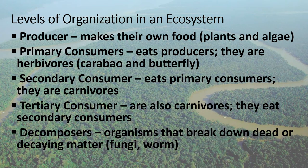This is the level of organization in an ecosystem. Producers can make their own food, like plants and algae. Primary consumers eat producers — they are herbivores, like carabao and butterfly. Secondary consumers eat primary consumers; they are carnivores. Tertiary consumers are also carnivores, and they eat secondary consumers. Carnivores in an ecosystem can change their niche depending on what organisms or animals they eat.